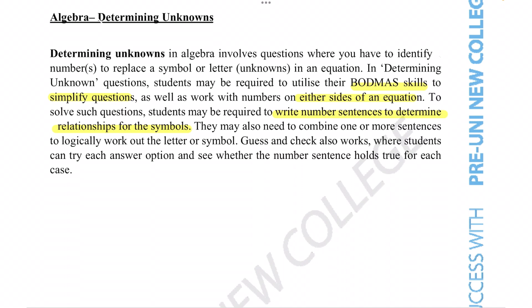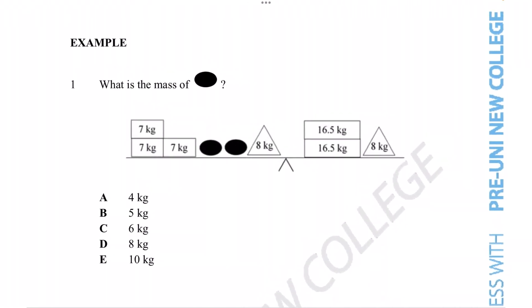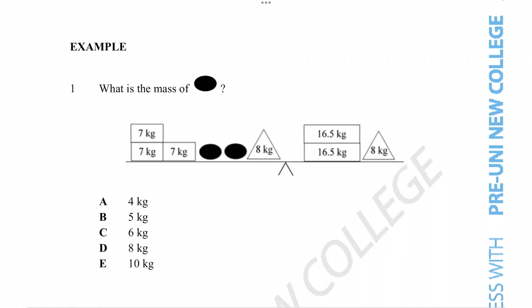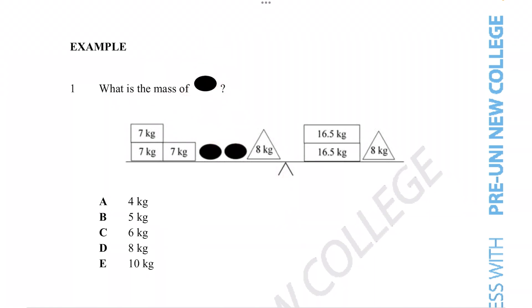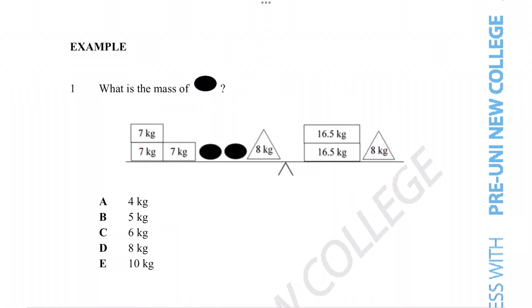We'll go through exactly how to manipulate these number sentences by working through an example question. The aim isn't just to get the answer — we want to develop the skills used when doing determining unknown questions. We talked about the importance of using number sentences, and this question wants us to figure out the mass of a circle on a scale. We want to transform the question into a number sentence, since our brain finds it easier to work with these rather than interpreting the picture.